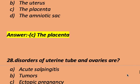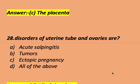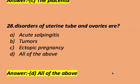The disorders of the uterine tube and ovaries are: acute salpingitis, tumors, ectopic pregnancy, or all of the above. The right answer is all of the above. Acute salpingitis, tumors, and ectopic pregnancy are all disorders of the uterine tube and ovaries.